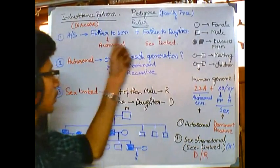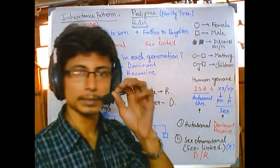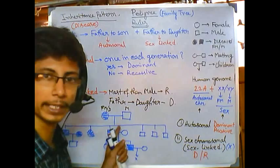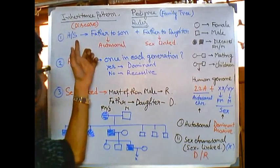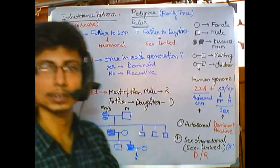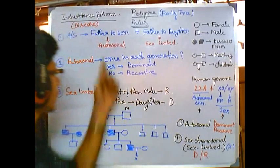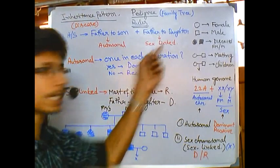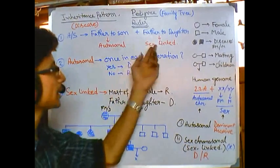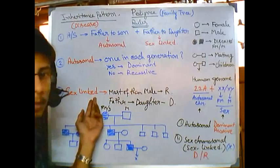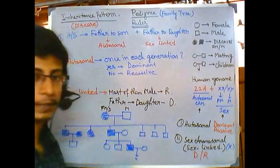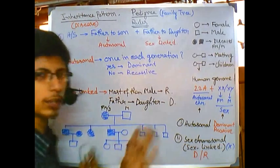Now, using our formulas from the beginning — there are three different things you need to look for in a pedigree. First, look for whether the trait is coming from father to son or father to daughter, to determine whether it is autosomal or sex-linked. Second, once you identify autosomal or sex-linked, apply only the relevant formula. You only need two formulas to analyze a single-generation pedigree.